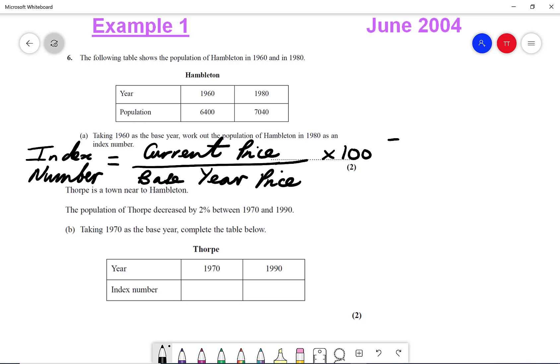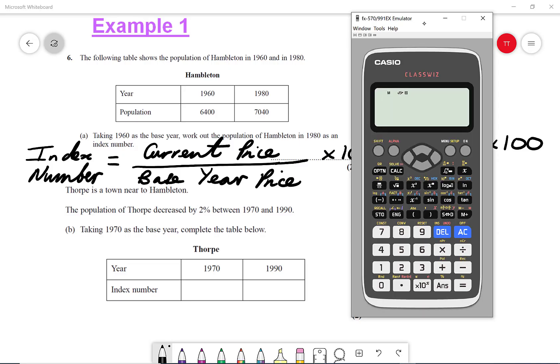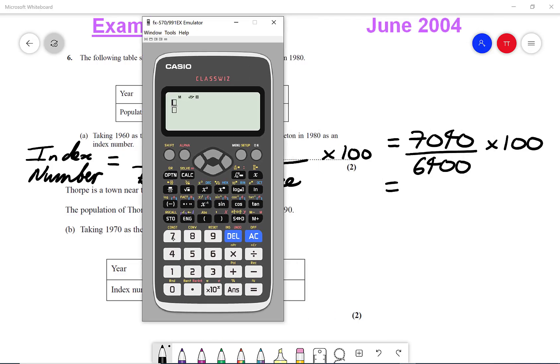So in our case, 7,040 divided by 6,400 multiplied by 100. I can get my calculator here, type it in: 7,040 over 6,400 times that by 100, and that will give me 110.